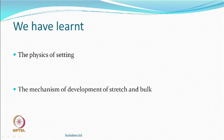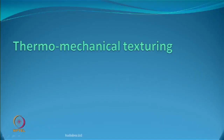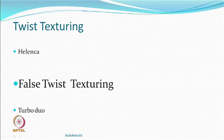So what have we learned? We have learned the physics of setting, and we can also say more confidently that we know the mechanism of development of stretch and bulk. We will now be talking further on thermomechanical texturing. That means we are looking at a yarn or a fibre which responds to heat. Mechanical because we are still looking at twisting, which is a mechanical process. Within that, we are looking at twist texturing — twisting is being used as the mechanism for deformation — and hopefully you will produce a stretch yarn.